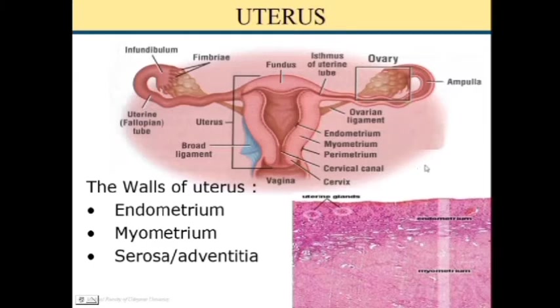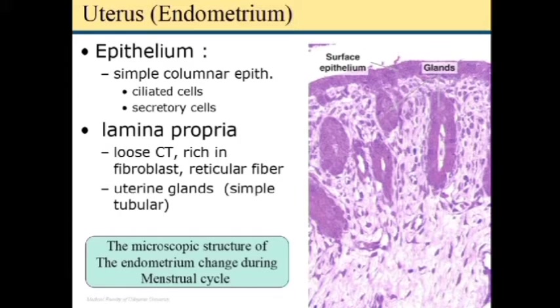The layers of the uterus are three: endometrium, myometrium, and serosa or adventitia. The endometrium is the innermost layer and is actually the mucosa, which consists of the epithelium and the lamina propria. The epithelium of the uterus consists of simple columnar epithelium with ciliated cells and secretory cells.